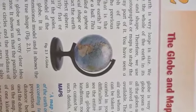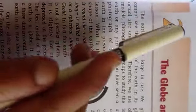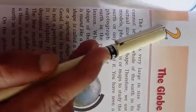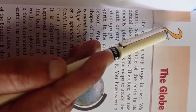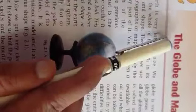Good morning students. Today I am going to start standard 6th, chapter number 2 of geography. The chapter name is The Globe and the Maps.